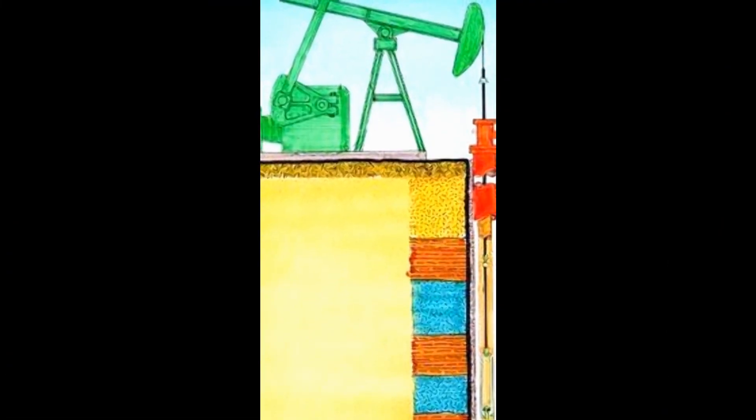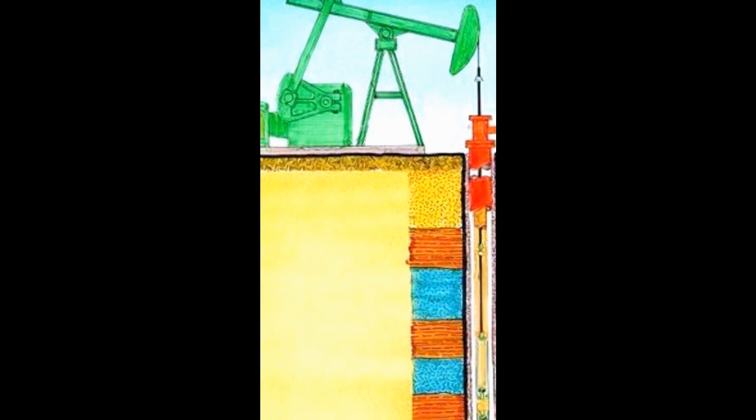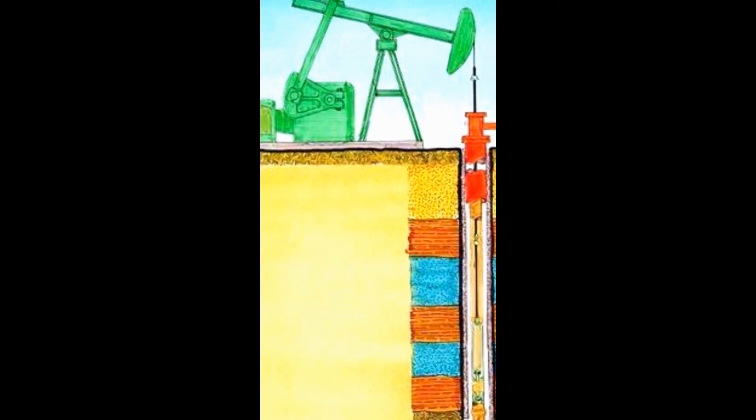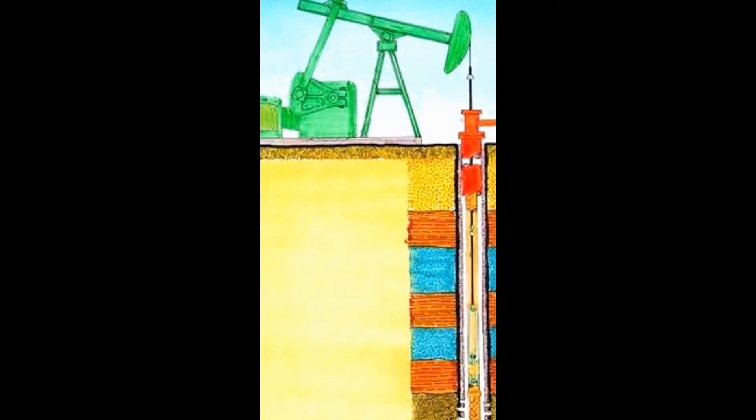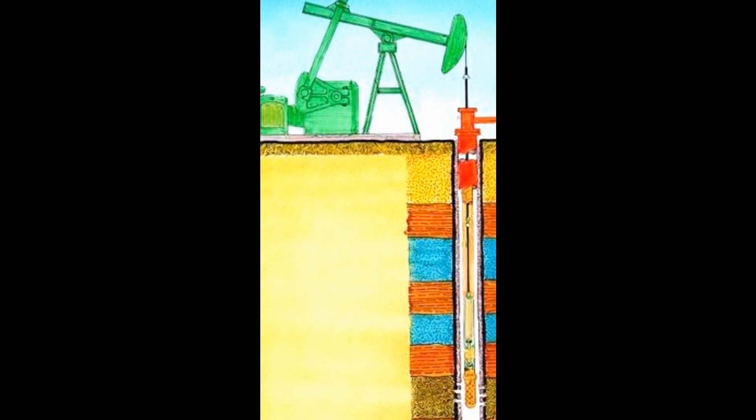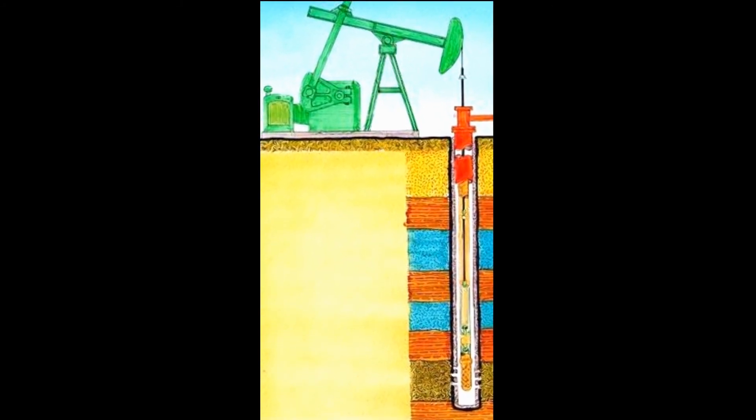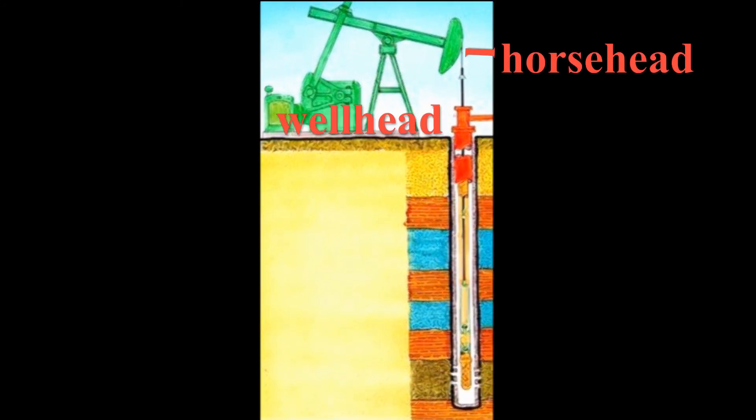This diagram shows the components needed to provide artificial lift in a sucker rod pumping system starting at the horsehead and moving downward. They are the horsehead, the wellhead, the flowline, the tubing, and the pump.